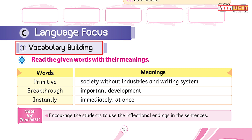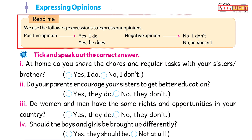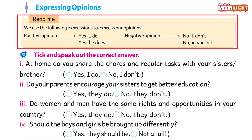We have already done the first category — vocabulary building — while reading the text. Let's move to our next question: how do we express our opinions? I might say yes I do, or no I don't. You might say yes you do, or no you don't. This is how we express opinions either in a positive or negative way.